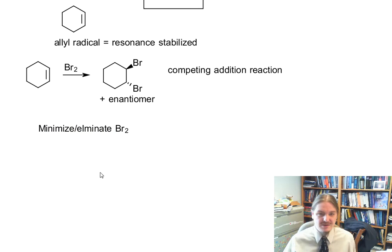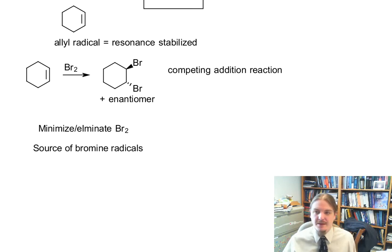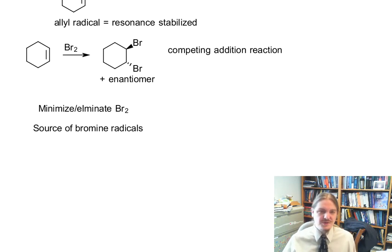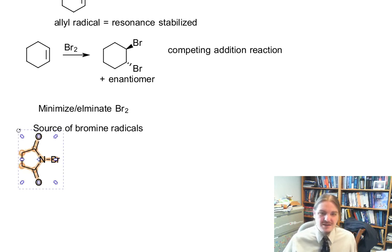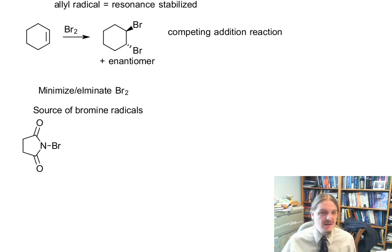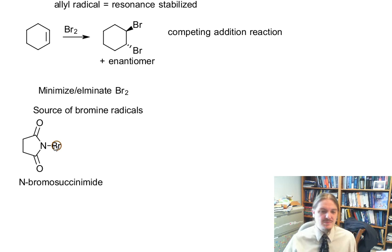This is the trick: we want a source of bromine radicals, but not molecular bromine. The reagent of choice — there are actually a couple of things in the organic chemist's toolbox, but the general reagent of choice looks like this. This molecule is called N-bromosuccinimide. When you just have a hydrogen here instead of bromine, that's just succinimide. So with the bromine on the nitrogen, it's N-bromosuccinimide.